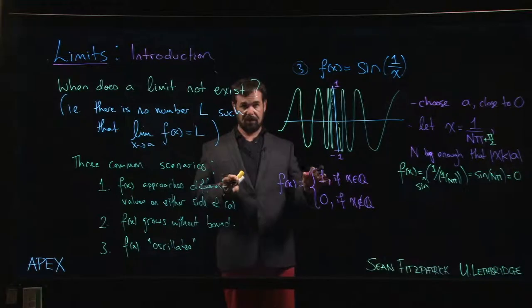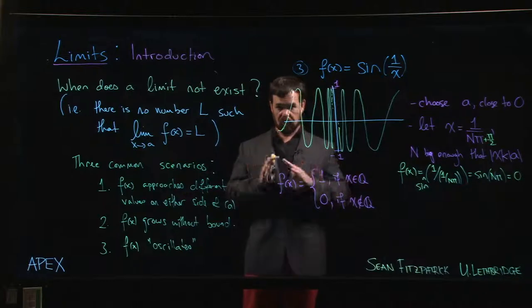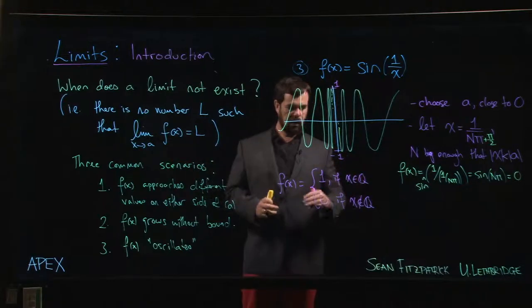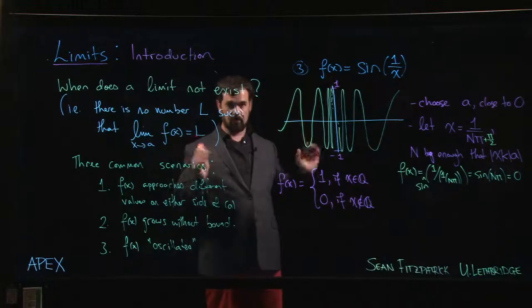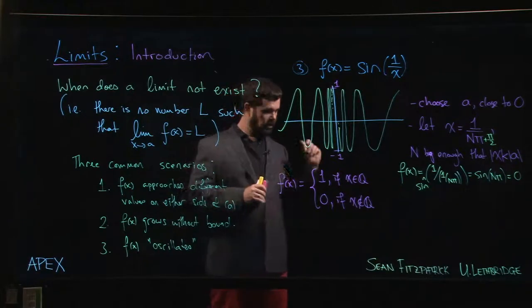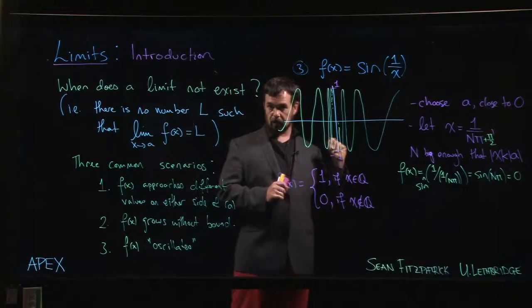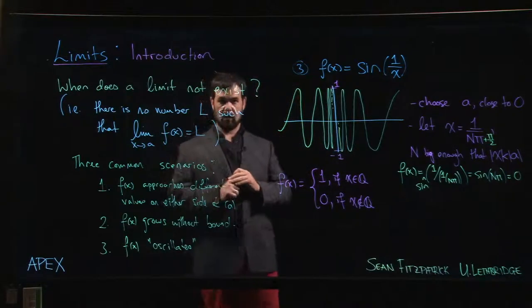This is a function that we can't even graph. To understand why you can't graph it, you have to understand a little bit about the structure of the real number system. One of the basic facts is: choose any two real numbers, no matter how close together they are, there is always a rational number in between them. Choose any two rational numbers, no matter how close together they are, and there's always an irrational number between those.